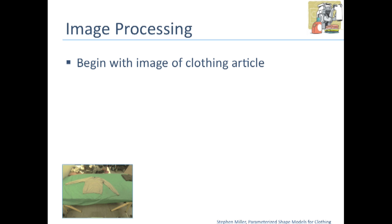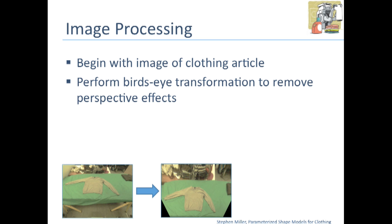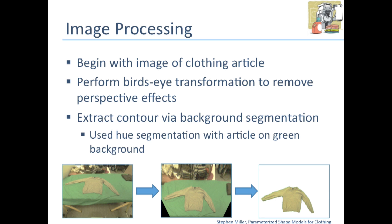At runtime, we're going to be presented with some image, presumably coming from a robot's camera. We're going to perform a bird's eye transformation to remove any perspective effects. Then we'll extract the contour via some form of background segmentation. In our experiments, we used the article of clothing on a green table, so hue thresholding was sufficient to do this.